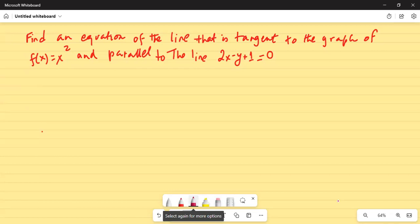Find the equation of the line that is tangent to the graph of f(x) equal to x squared and parallel to the line 2x minus y plus 1 equal to 0.